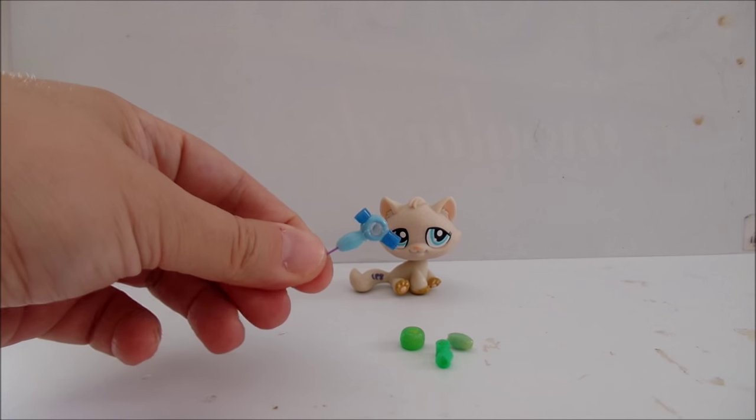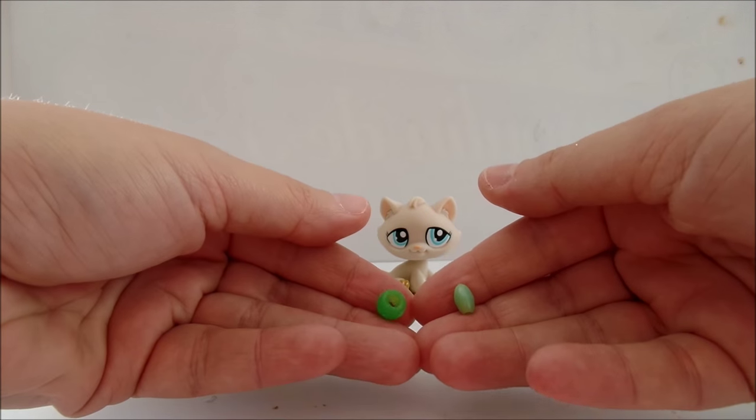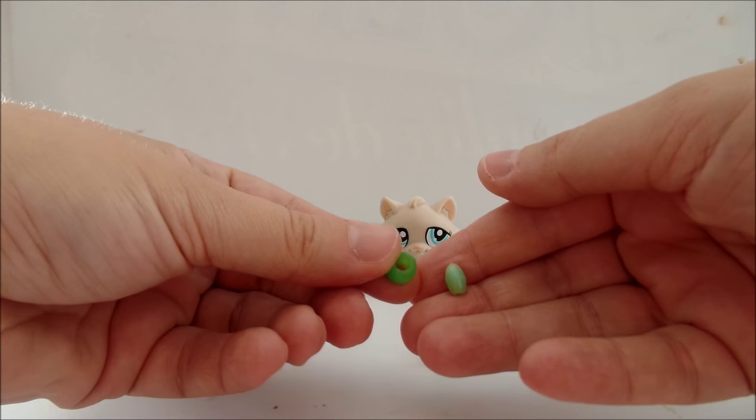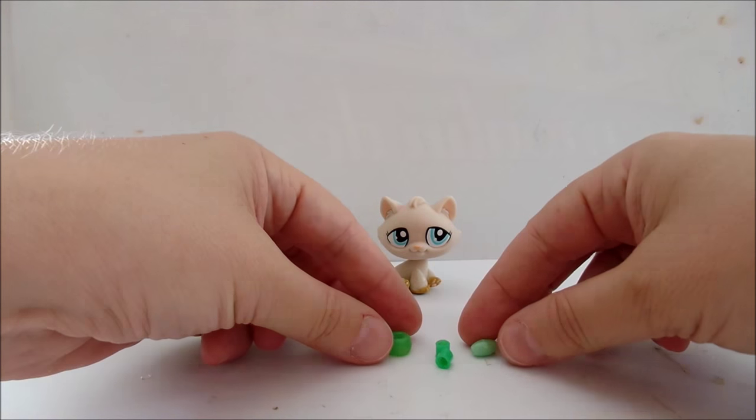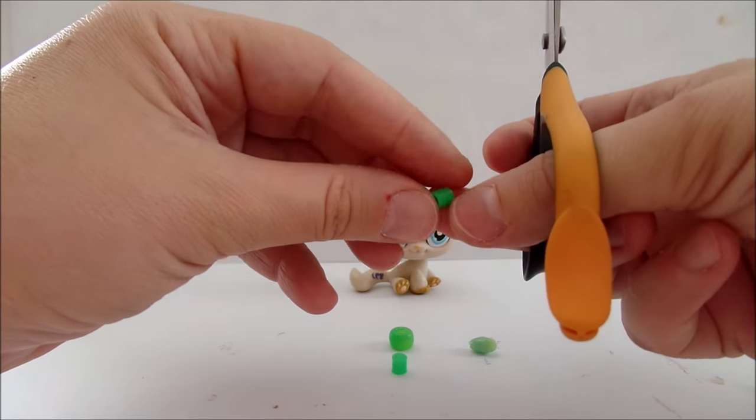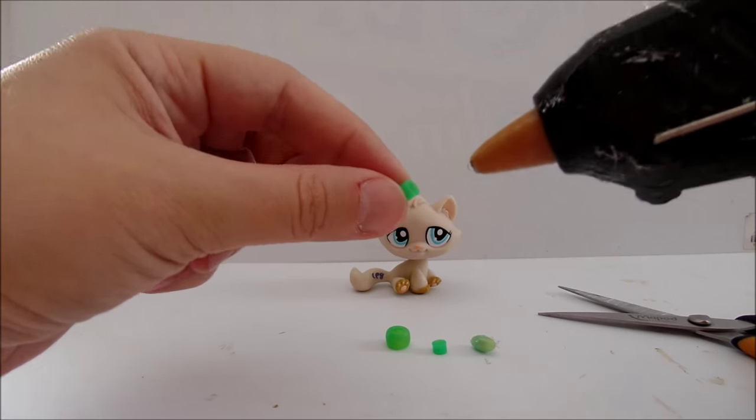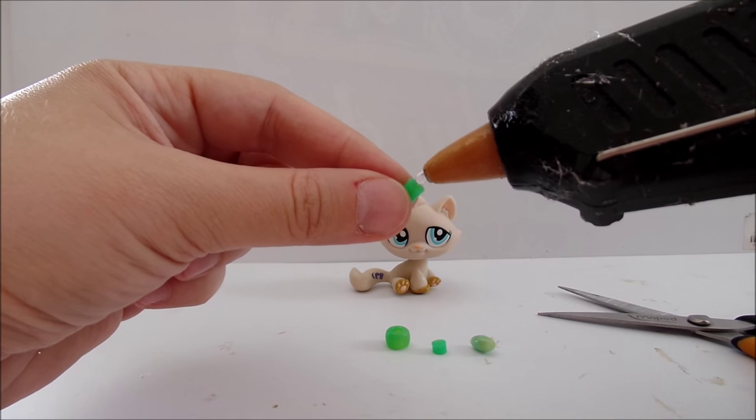In order to make a blow dryer you will need two beads from the bead value pack and two pearl beads. Take one pearl bead and cut in half. Now start gluing the beads together.